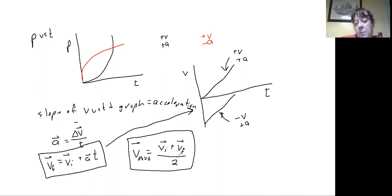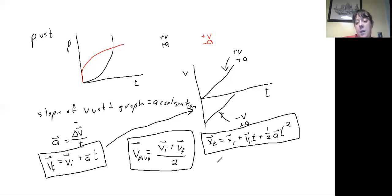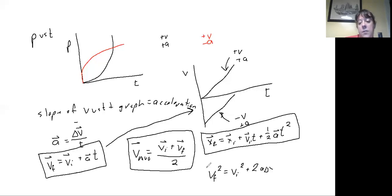The fourth kinematics equation comes from substituting the second and third equations into the first equation, arriving at the long equation: final position equals initial position plus initial velocity times time plus one half times acceleration times time squared. The fifth equation is vf squared equals vi squared plus 2a times delta x. One convenient thing about this equation is that it doesn't include time, which can make problem solving simpler sometimes.